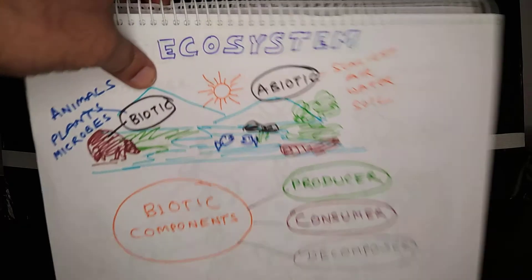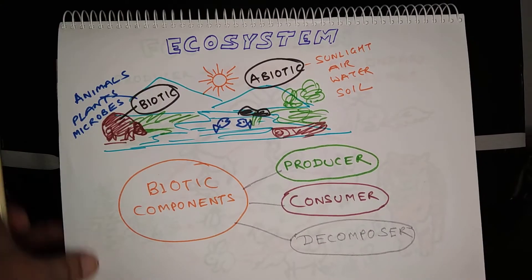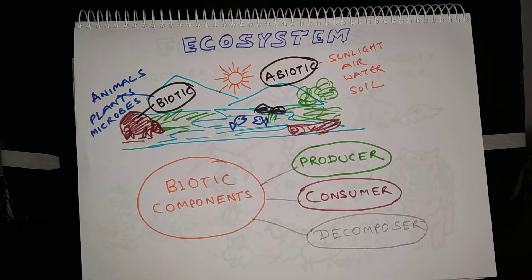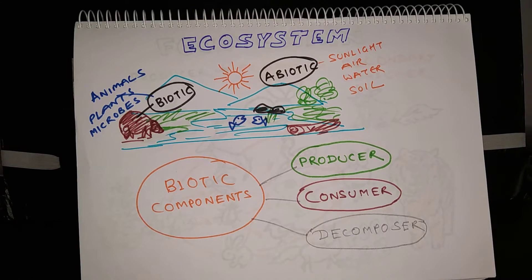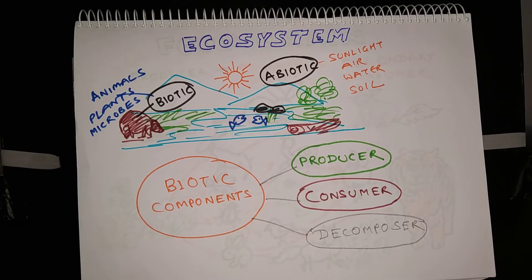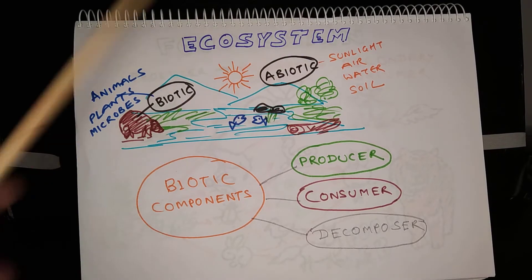Let us start with the ecosystem. What is ecosystem? Ecosystem is a system of interdependency between living beings and non-living things in a given geographical area. Let us try to understand this definition. For example, this is an ecosystem.